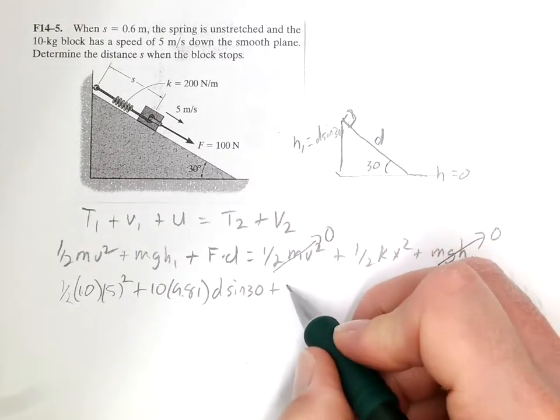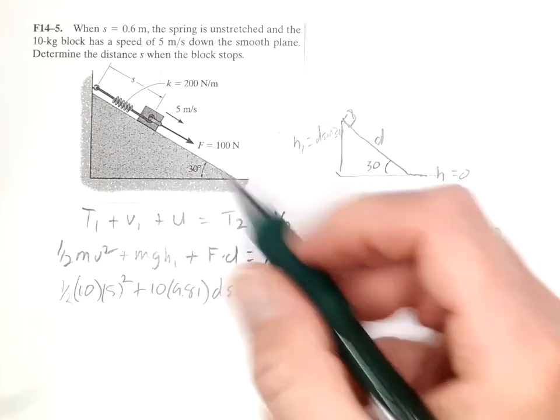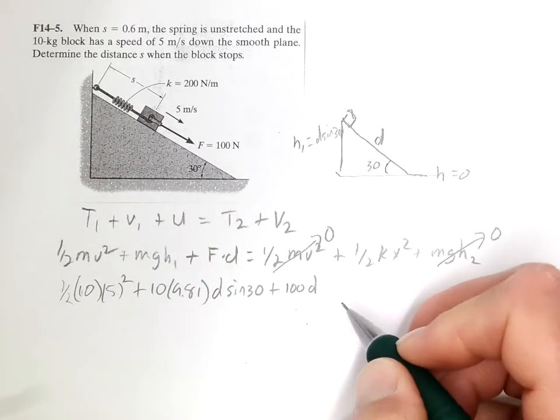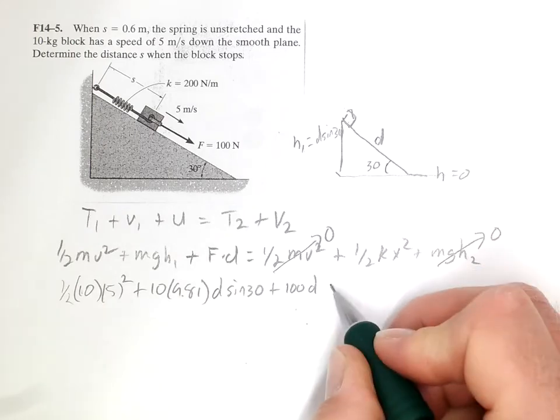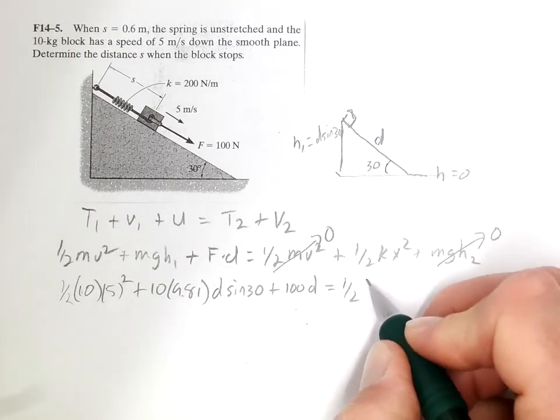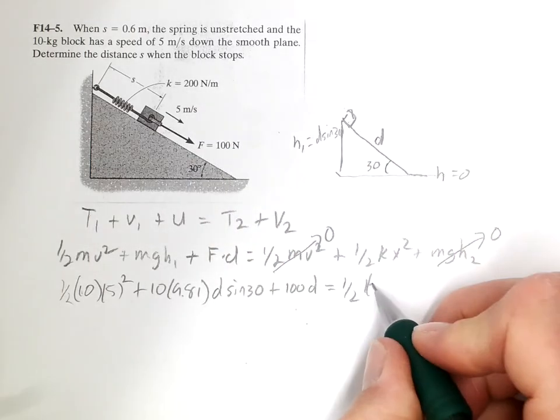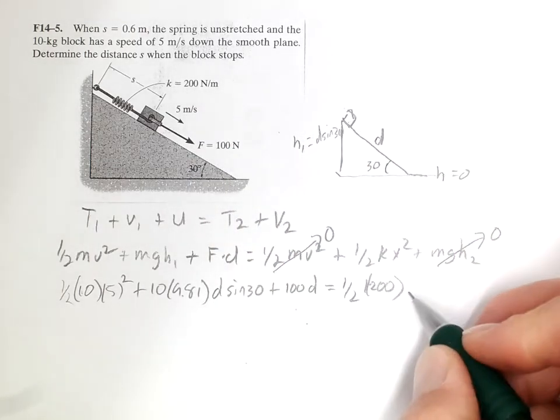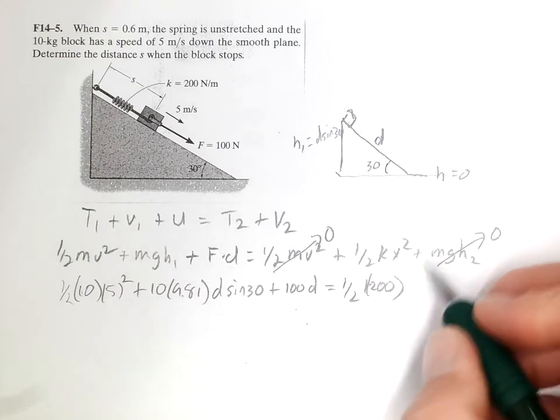F is 100, it's acting along the plane, it travels for a distance D. That's 0. 1 half K, which is 200, and X, which is also D.